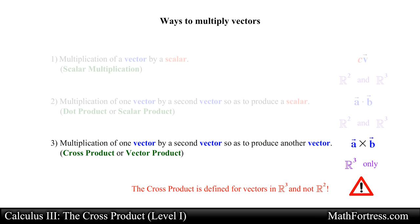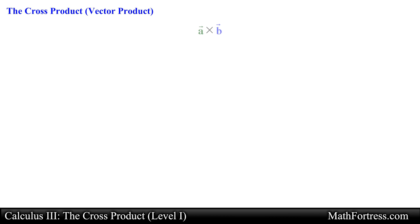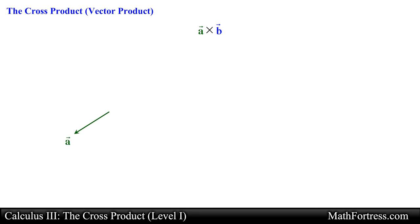With that out of the way, let's take a look at the geometric definition of the cross product. The cross product is denoted with a classical multiplication symbol and, as the alternative name suggests, the vector product is itself a vector. To define the cross product between vector a and vector b, we will start by drawing the two vectors with their tails located at the same point.